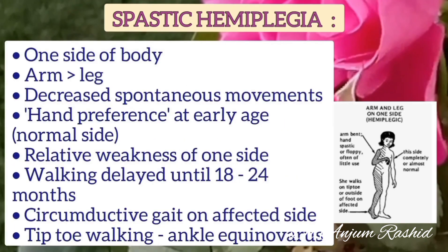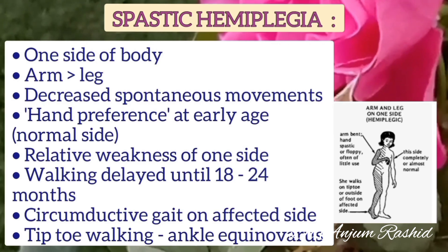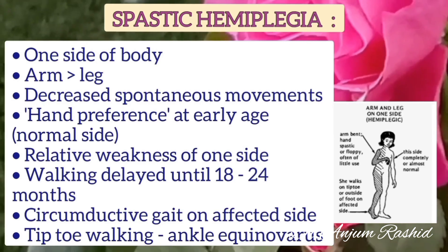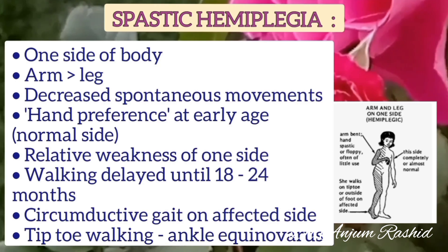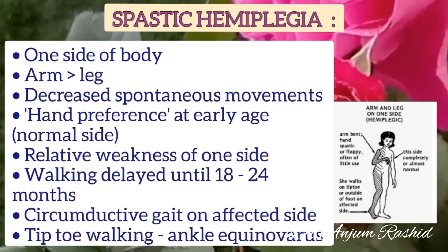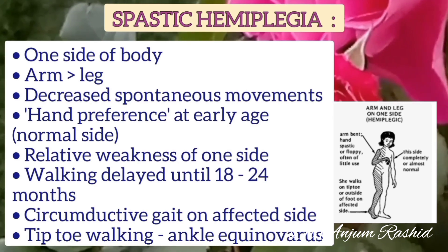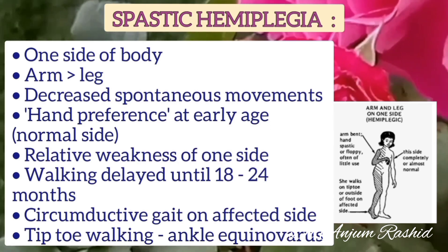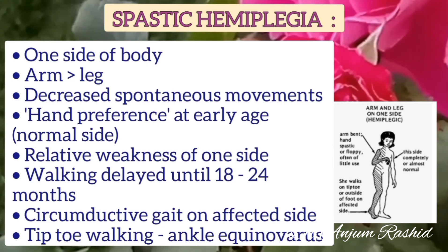In spastic hemiplegia, one side of the body is involved — arm is affected more than the leg. There is decreased spontaneous movement and relative weakness of one side. Hand preference is present at a very early age. Walking is delayed until 18 to 24 months, and circumductive gait is present on the affected side. Tiptoe walking is due to ankle equinovarus.